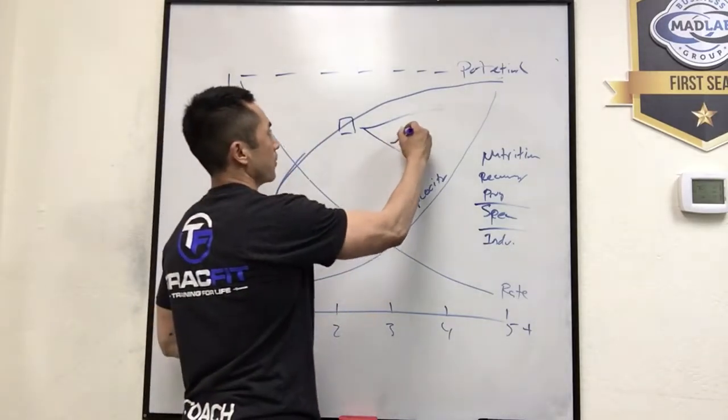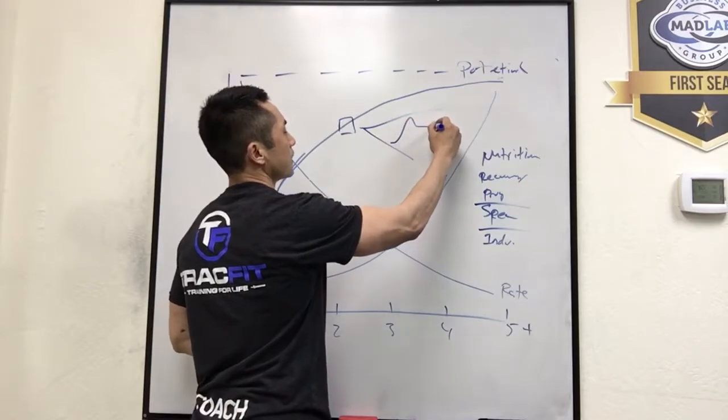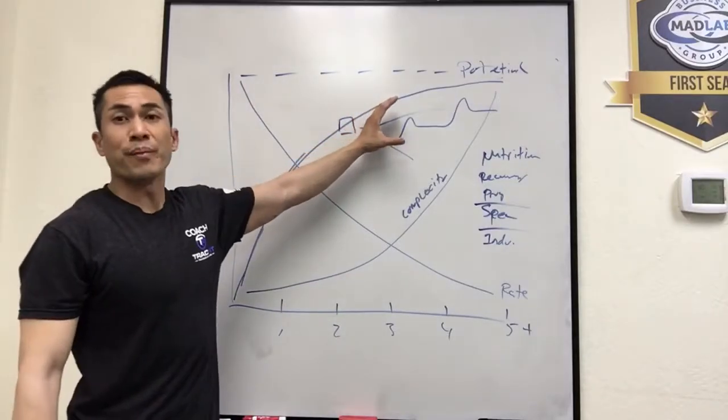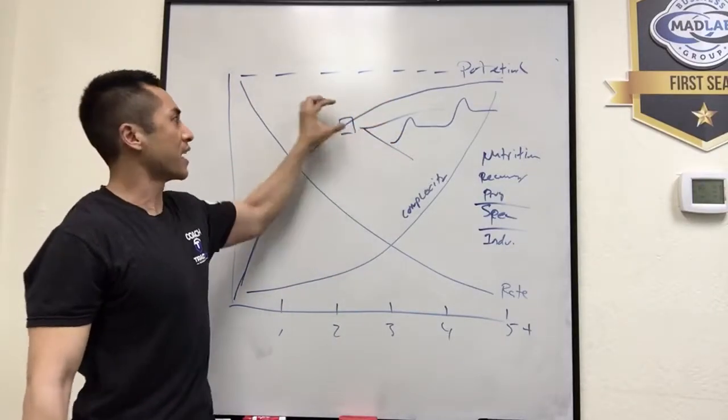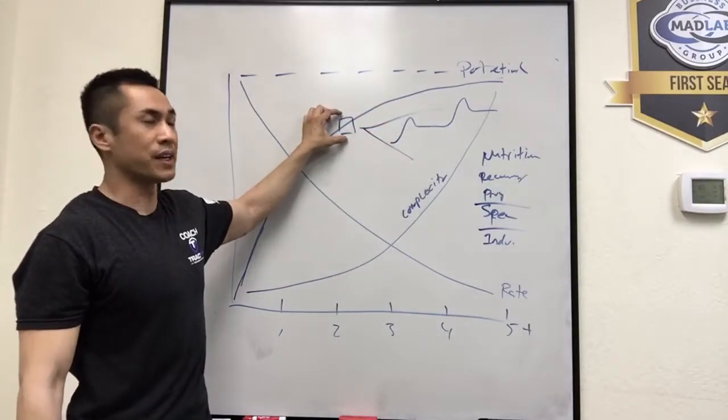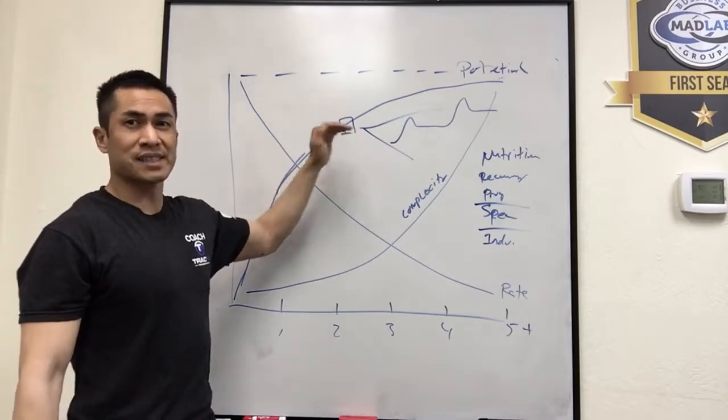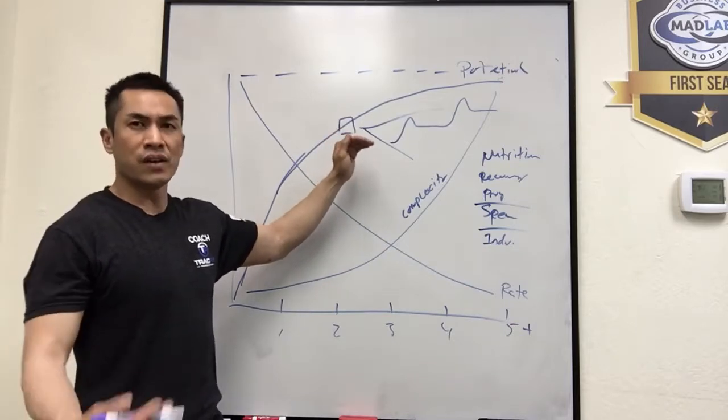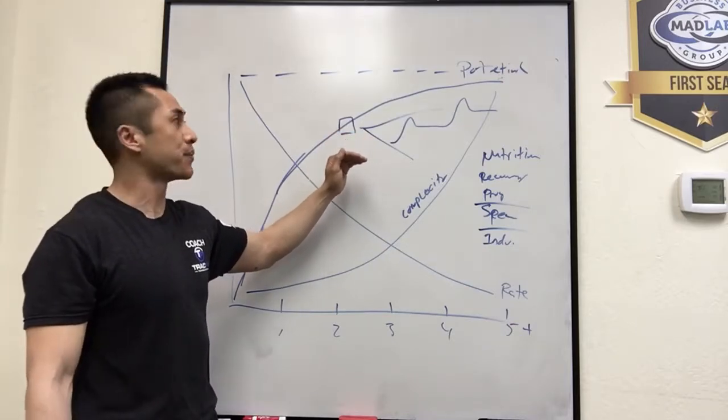You're going to see some advances, regressions, plateaus, advances, regressions, plateaus, and that's the normal path of mastery. You're going to see some ups and downs within this little curve right here. And that's if you're training consistently. You will see plateaus even if you're training consistently. It's just part of the process of learning and having your body adapt.